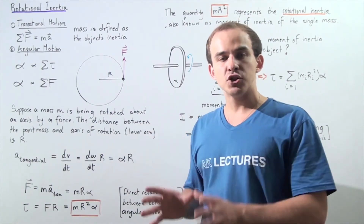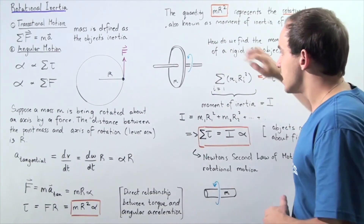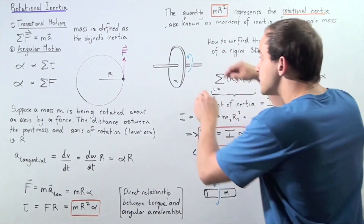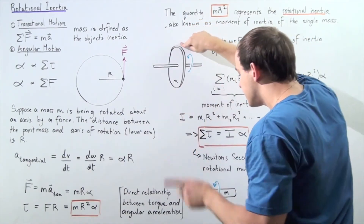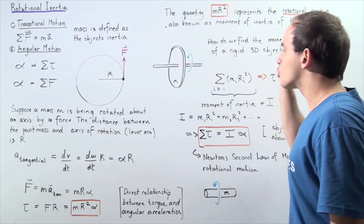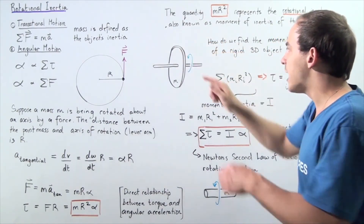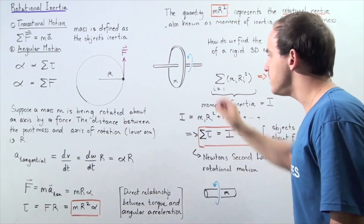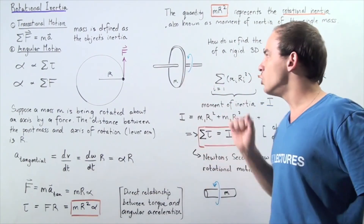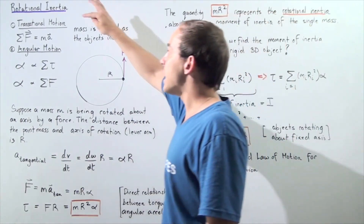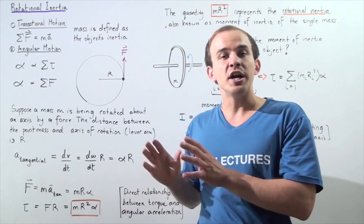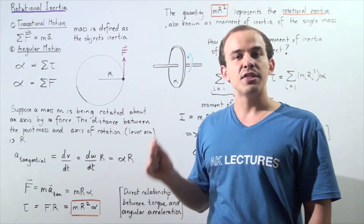Consider two rigid cylinders with the same exact mass M. The diameter of one object is much larger than the other. Because R is much greater for the larger object, it has a much higher moment of inertia. That means it will be much more difficult to make it rotate and much more difficult to stop it from rotating — in the same way that a translating object with very high mass has very high inertia, making it very difficult to stop.